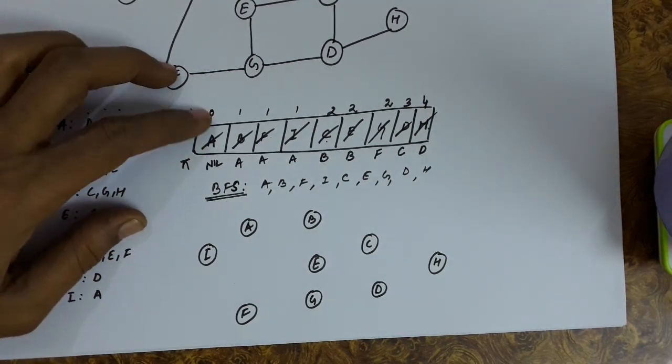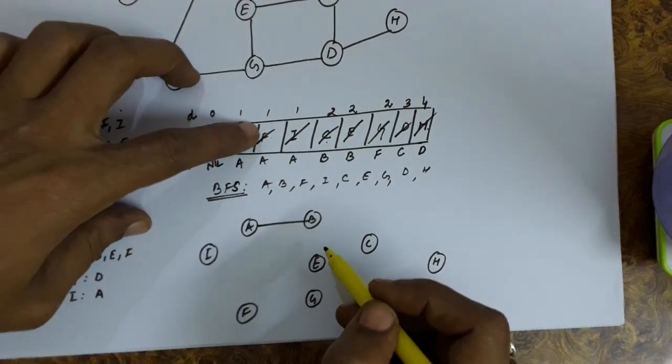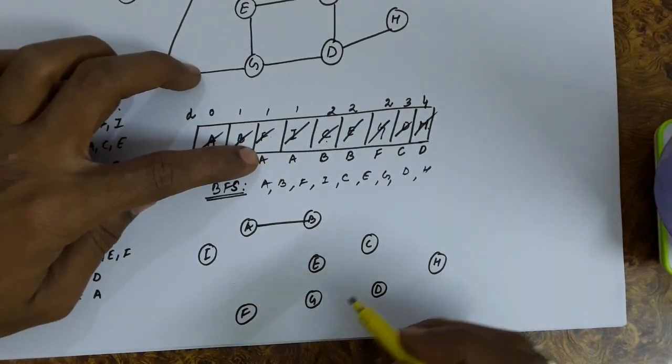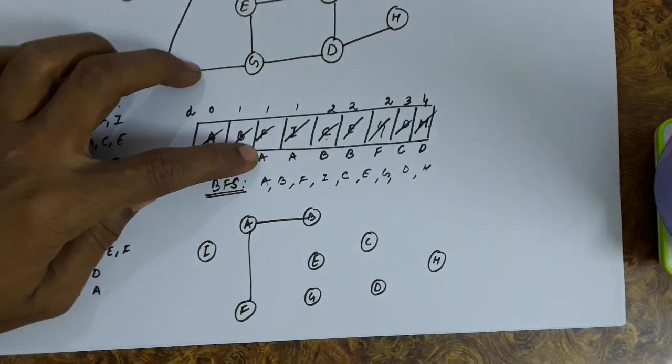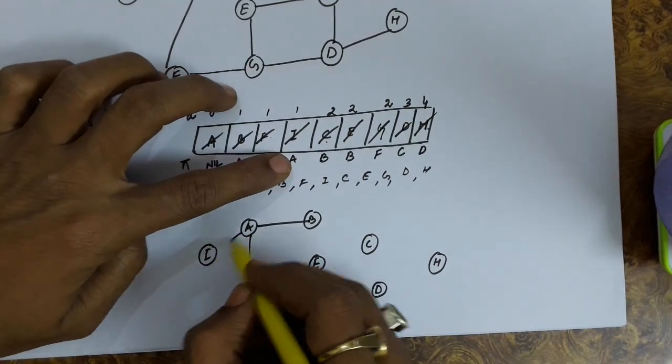So for A, there is no predecessor. For B, there is a predecessor A. For F, the predecessor is A. So draw the edge F A. For I, it is A. So I A is an edge.